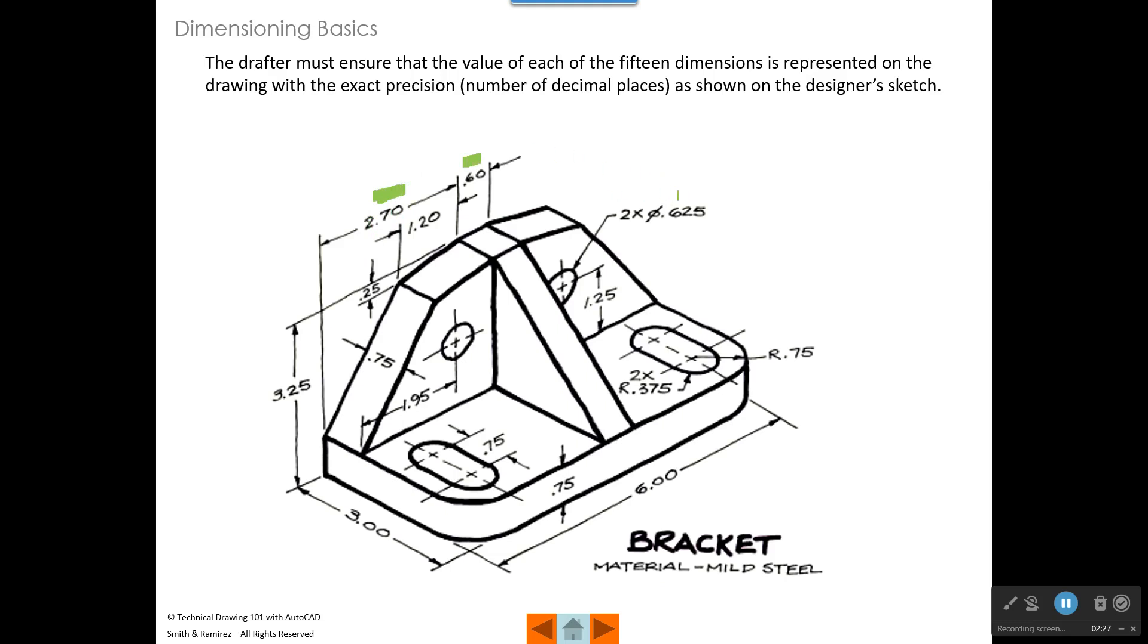But over here on the diameter of these two holes, we have a precision of three decimal places and we have three decimal places right here. The number of decimal places of precision can affect the value of the tolerances that may be added to the dimension. So it's important that if our sketch from the designer is three places, that we label our dimensions with three places. And if the designer sketches at two decimal places, we make sure that on our drawing, we label that dimension at two decimal places of precision. So you can see those dimensions circled there, two place precision and the one over here, three place precision.